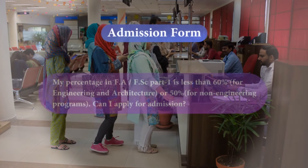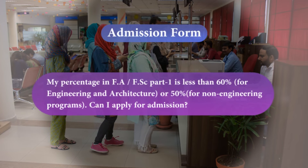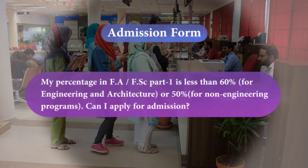The confirmation of admission letter will be issued by the Department of Office of Academics upon verification of documents from the respective boards. In any case, provisional admission will be cancelled with immediate effect if the candidate fails to achieve a minimum of 60% marks in intermediate for engineering and architecture programs, or a minimum of 50% for non-engineering programs.